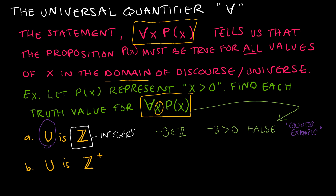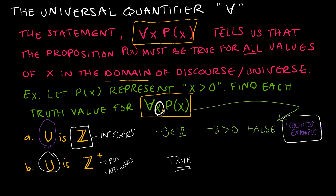Now let's take a look at the next example. The universe is positive integers, which starts with 1, 2, 3, 4, and so on. If I'm looking at all of those values, is it true that all of them are greater than 0? Yes. So this is true. Now that's not a proof — it's just our way of reasoning through it. I showed a counterexample for the false case, but I can't really do a formal proof for this yet.